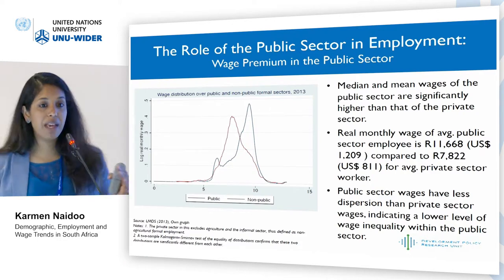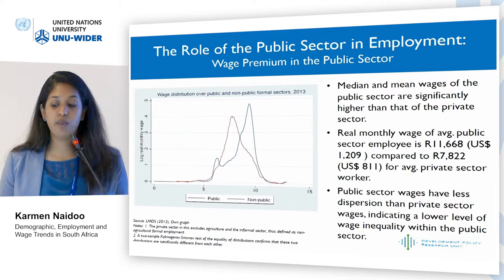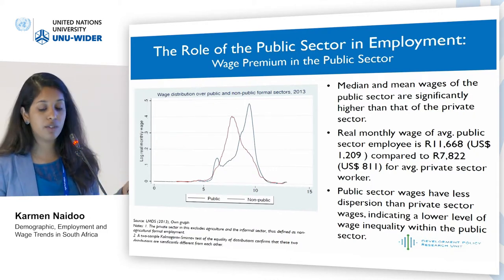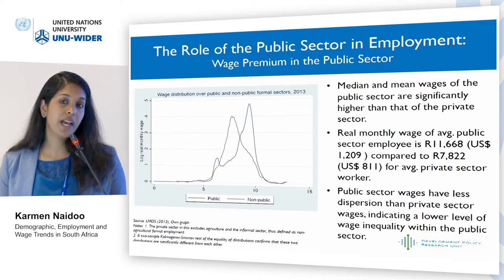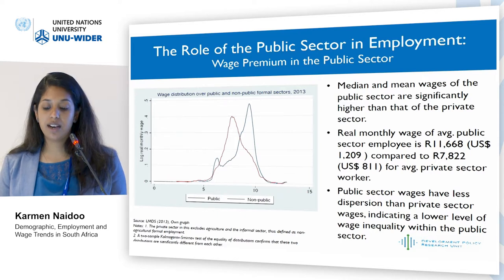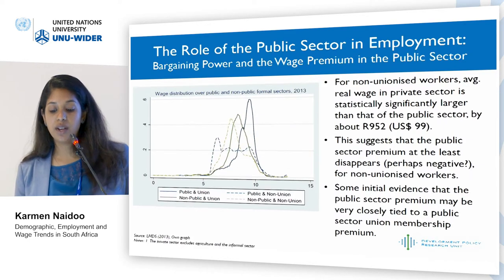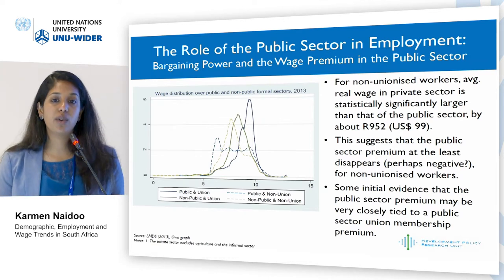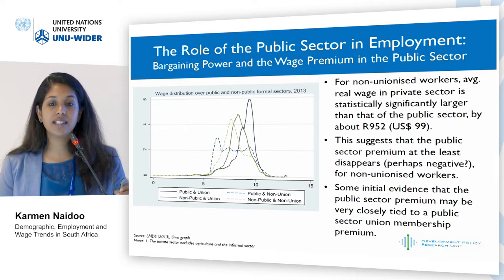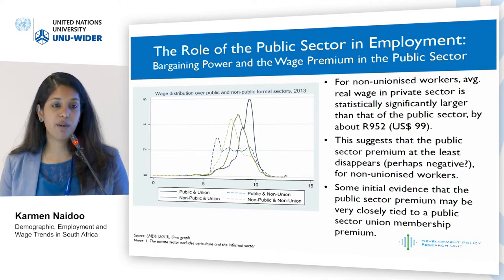To compare wage distributions between the public and private sectors, this plot shows that on average, both median and mean wages in the public sector are higher than in the private sector. When disaggregating by union status, for non-unionized workers this wage premium doesn't really exist, however for unionized workers there are still higher average wages in the public sector relative to the private sector.